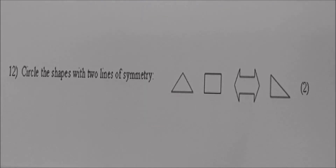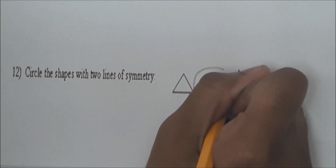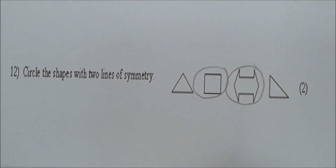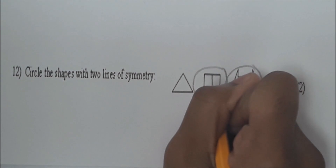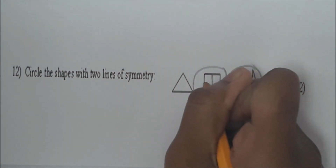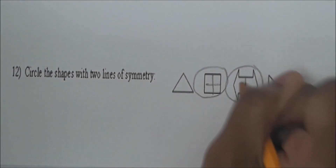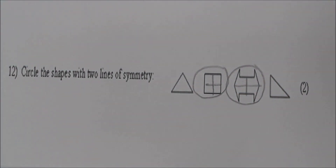Read number 12. Circle the shapes with two lines of symmetry. Circle the shapes. Rectangle. Draw the lines in so we can see what you're doing. I'm going to start right here, then go across — middle — start right here and go across. Perfect. Very good.